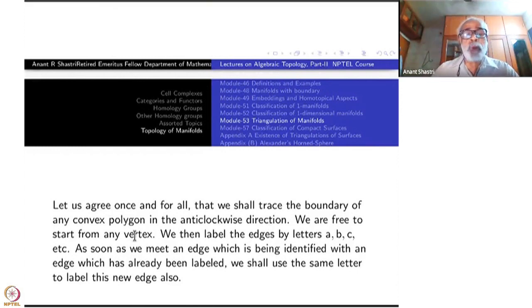So let us agree once and for all that we shall trace the boundary of any convex polygon in the anti-clockwise direction. Like we trace a circle in two different ways, anti-clockwise and clockwise. Fix once and for all, anti-clockwise direction. We are free to start from any vertex. That we don't fix. You can start from any vertex, keep going around.